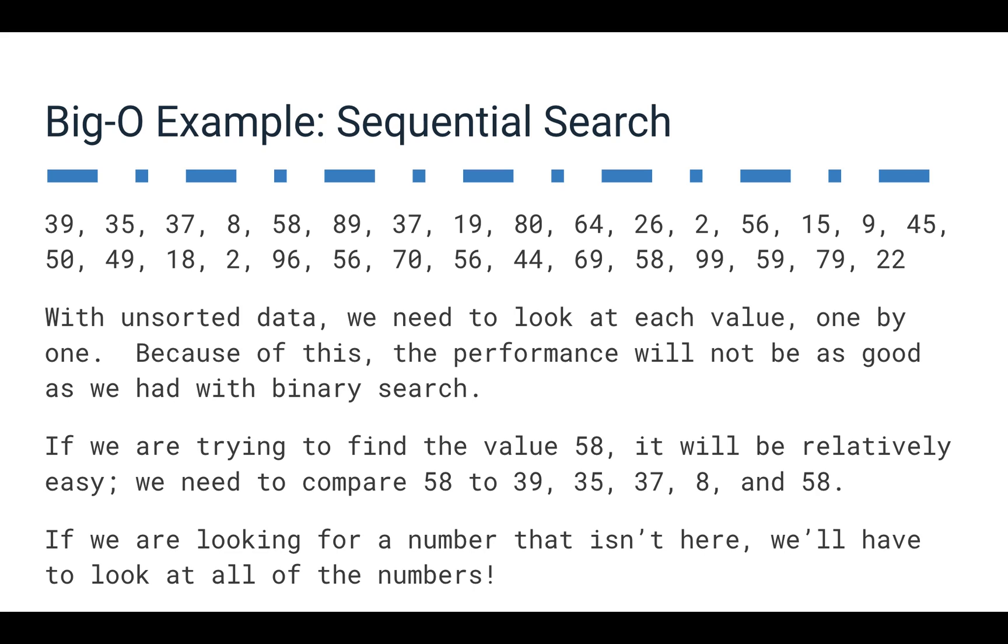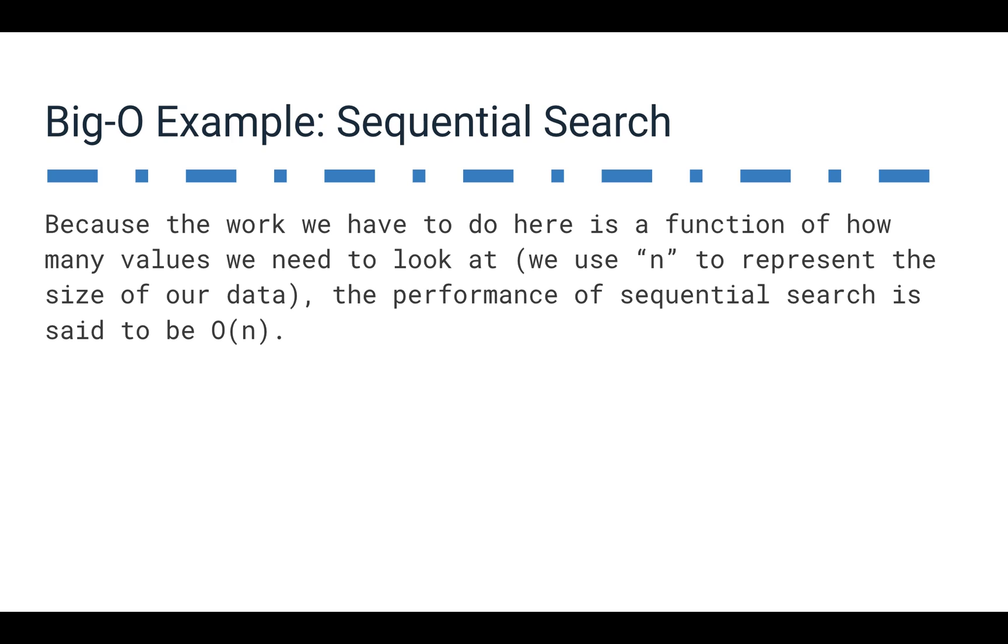And the only way we can do it is to look at things one by one, look at each value one by one. So, the performance isn't going to be as good as we had with binary search. If we try to find the value 58, we can look at a couple of values, we look at 39, 35, 37, 8, and then we find 58. But if we're looking for a number that isn't there, we have to look at every single number in this particular list. So, the work we have to do here is a function of how many values we need to look at. So, we'll use n as that number of values, and that means that our sequential search is Big O of n.